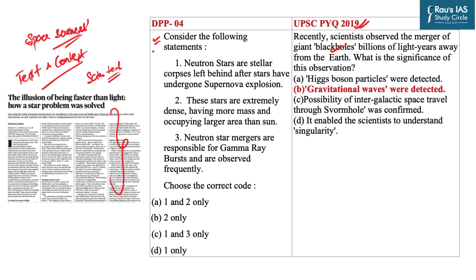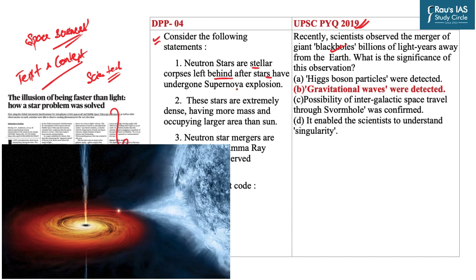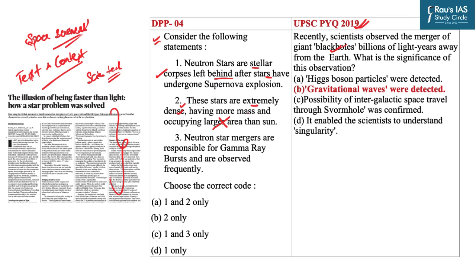There are three statements; find the correct one. Statement one says neutron stars are stellar corpses left behind after stars have undergone a supernova explosion — this is correct. Statement two says these stars are extremely dense, having more mass and occupying a larger area than the sun — this is incorrect, as neutron stars actually occupy a very small area, which is precisely why they are extremely dense. Statement three says neutron star mergers are responsible for gamma-ray bursts and are observed frequently — this is correct. Hence option C, statements 1 and 3, is the correct answer.